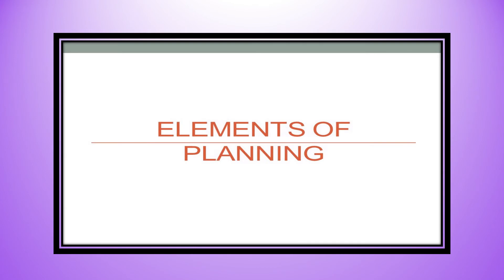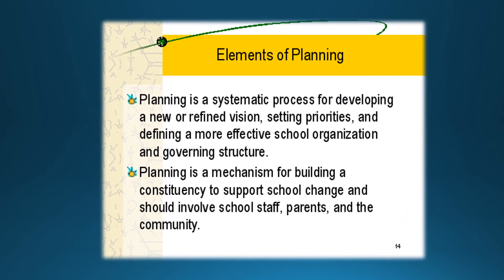Now we will discuss elements of planning. Planning is a systematic process for developing a new or refined vision, setting priorities, and defining more effective school organization and governing structure. Planning is also a mechanism for building a constituency to support school change, and should involve school staff, parents, and the community.